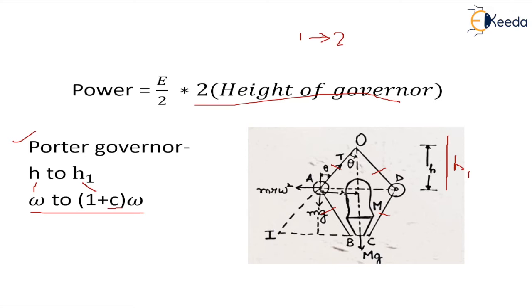And displacement of sleeve is from this point BC to whatever is the position depending upon the movement of the balls. Therefore, the displacement of sleeve is twice the height of the governor. Now because these two are the common factors, we can cancel them. So power will be E into height of the governor.